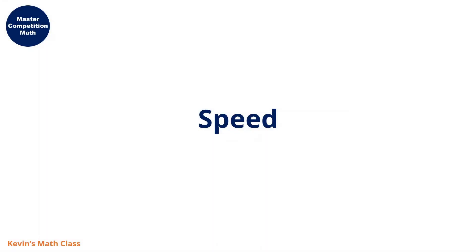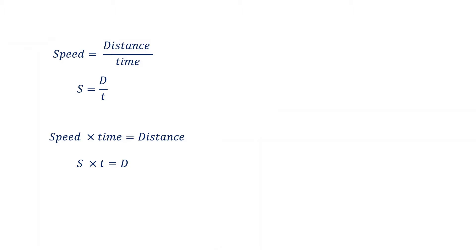In this lecture, we talk about speed. Speed, by definition, is distance over time. For example, if the distance is 100 kilometers and it takes two hours, 100 divided by 2 is 50.